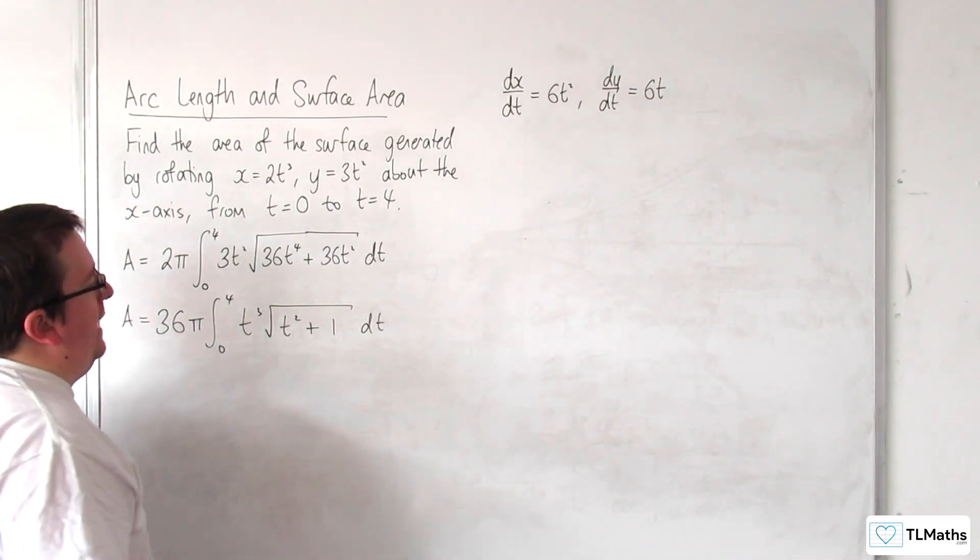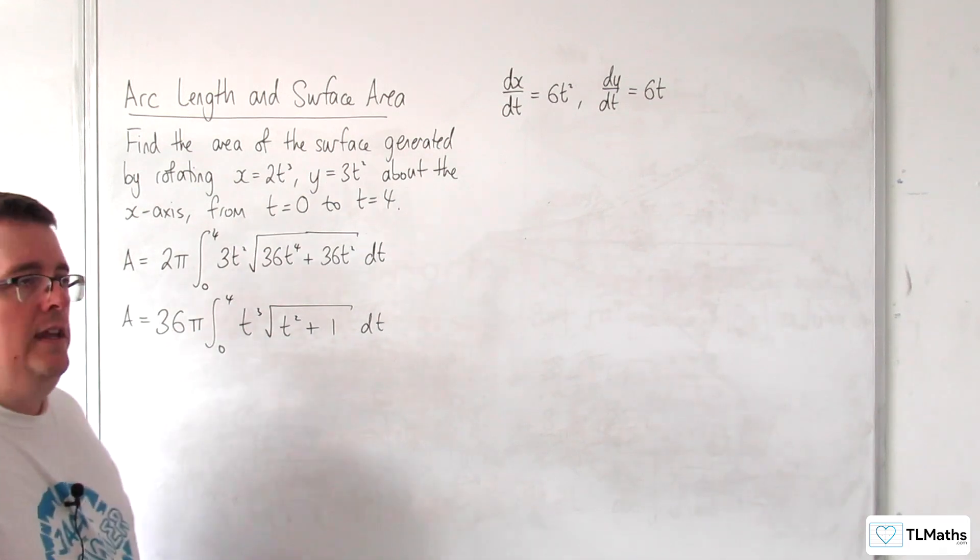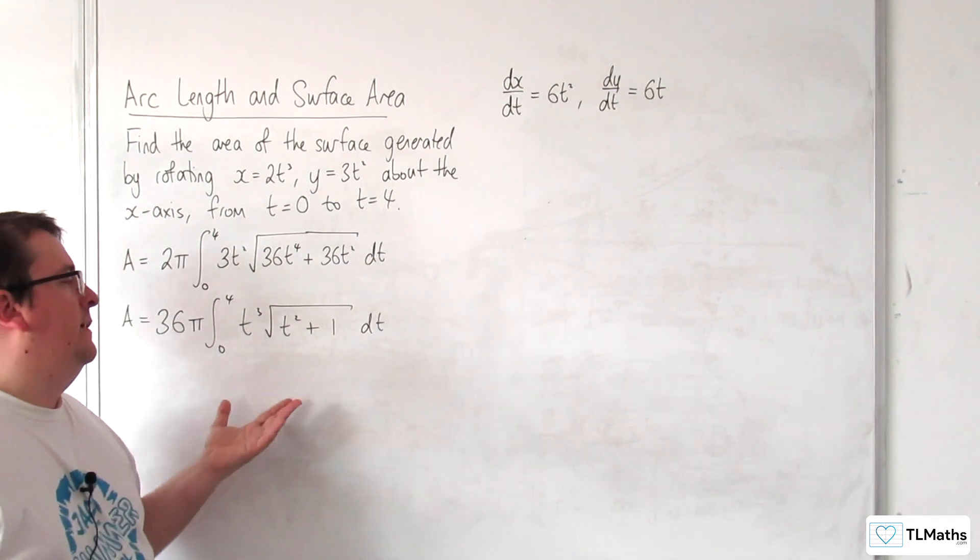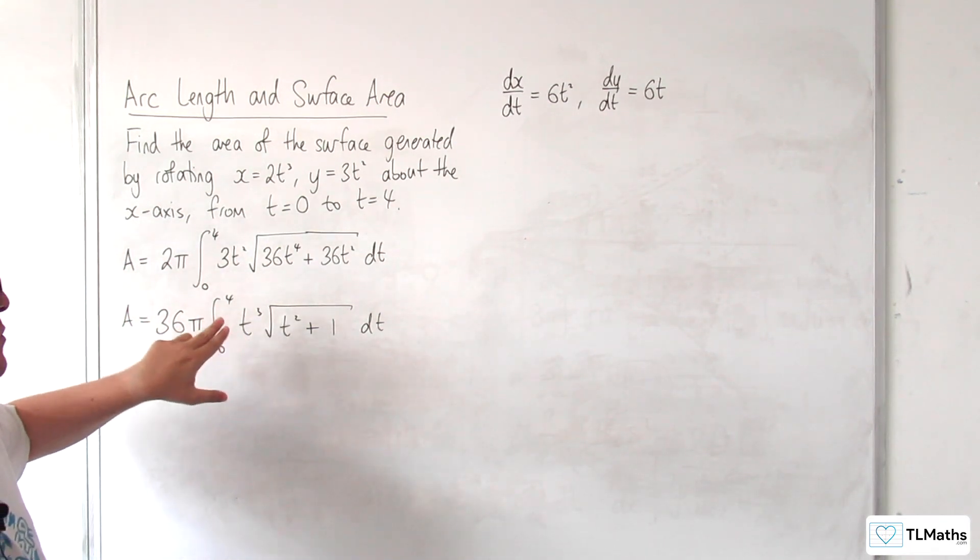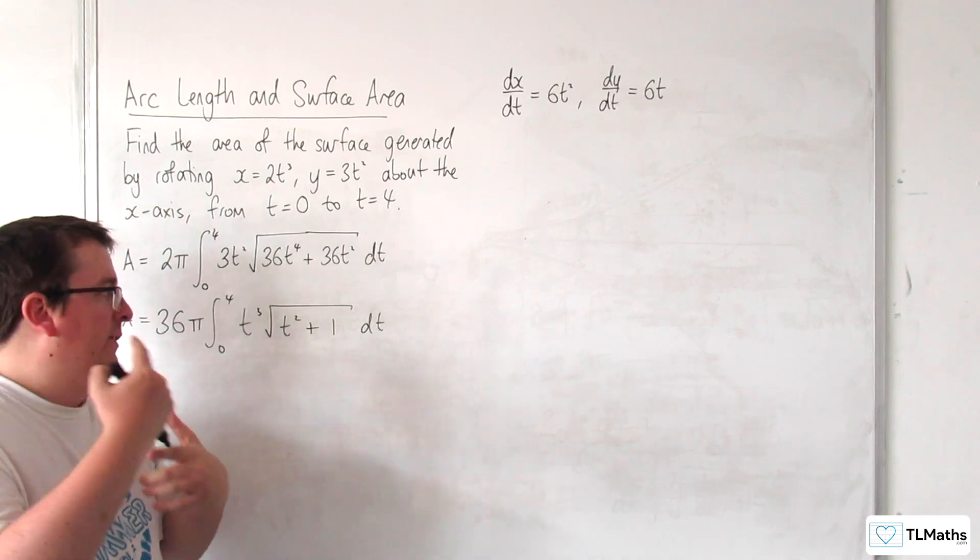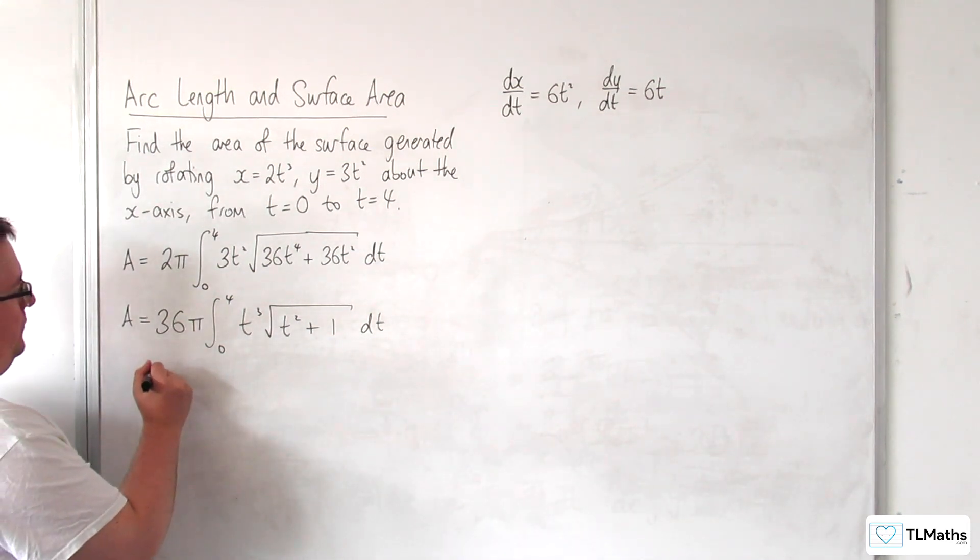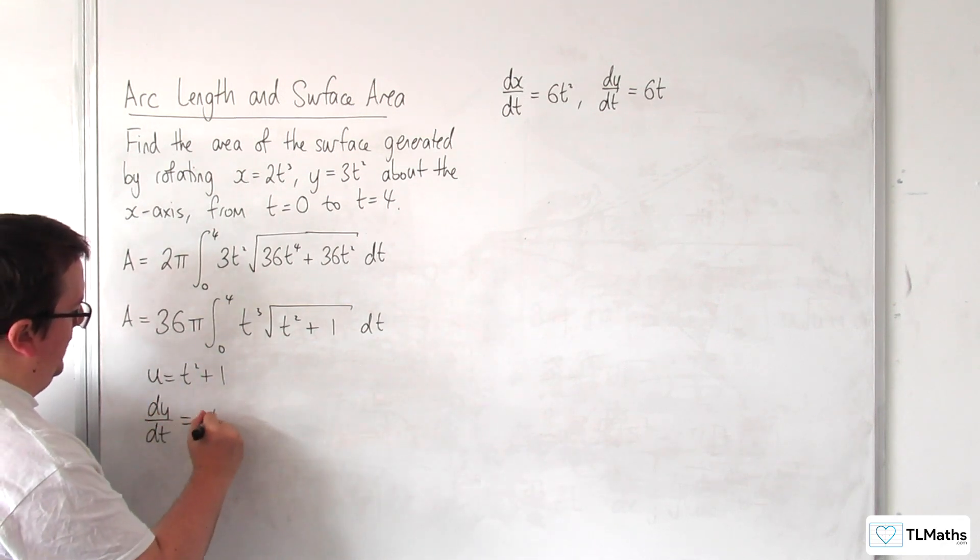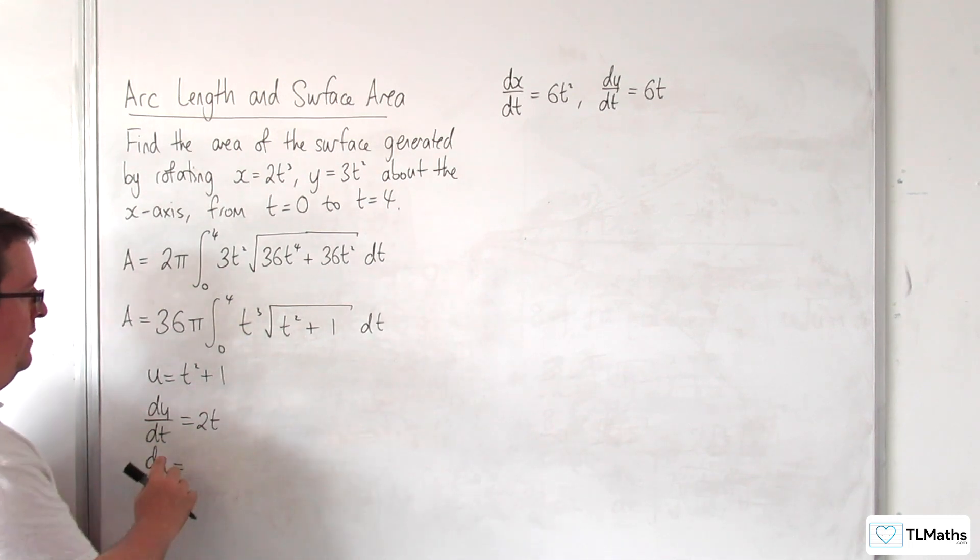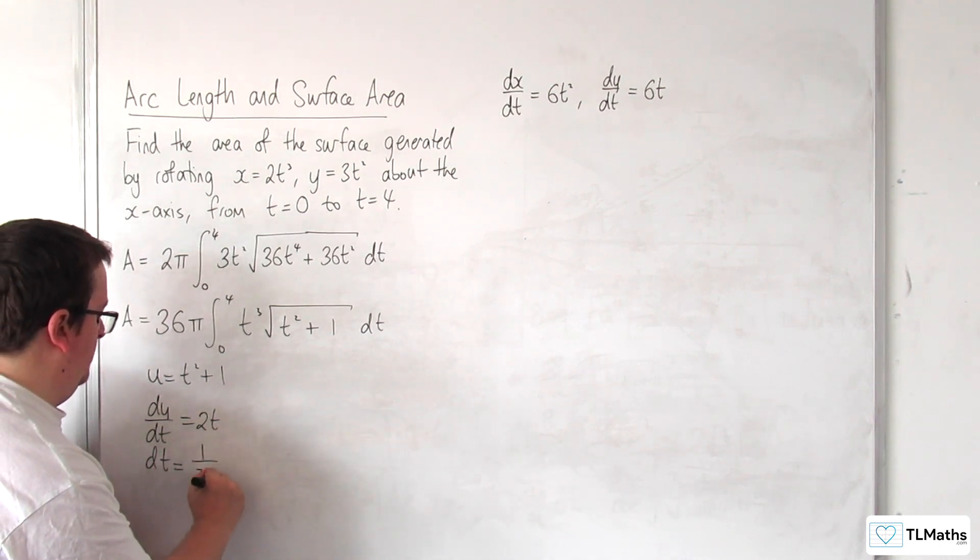Now, the substitution that we should make here is actually u is equal to the t squared plus 1. The reason why you might go along that line is because you know that t squared is going to differentiate to t, which you know you're going to end up dividing through, which is going to knock out t here, which will allow you to write what's outside the square root in terms of u. Okay, so you've got to be thinking a few steps ahead here, so we're going to use u is equal to t squared plus 1, so du by dt is equal to 2t, so dt is equal to 1 over 2t du.